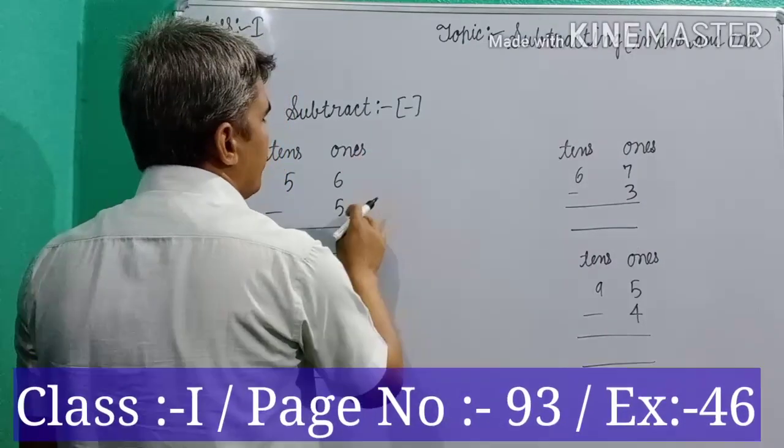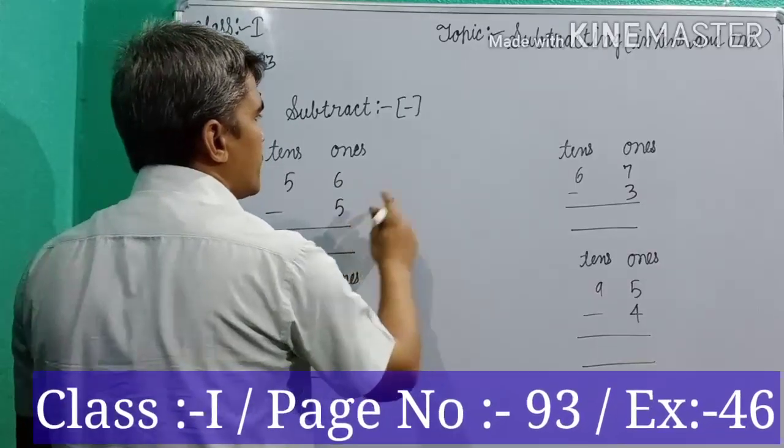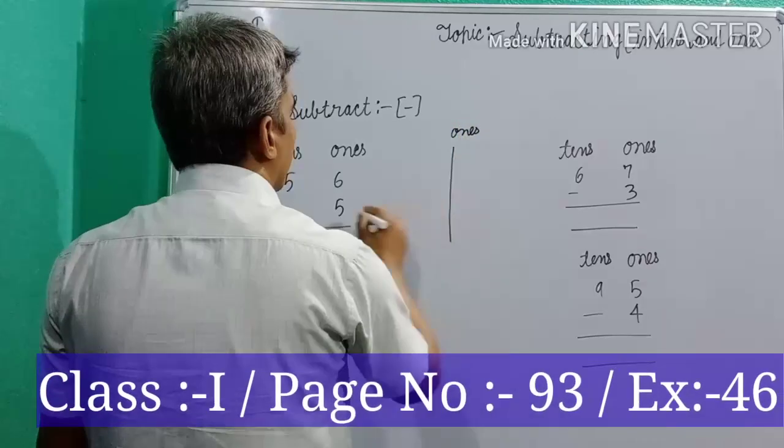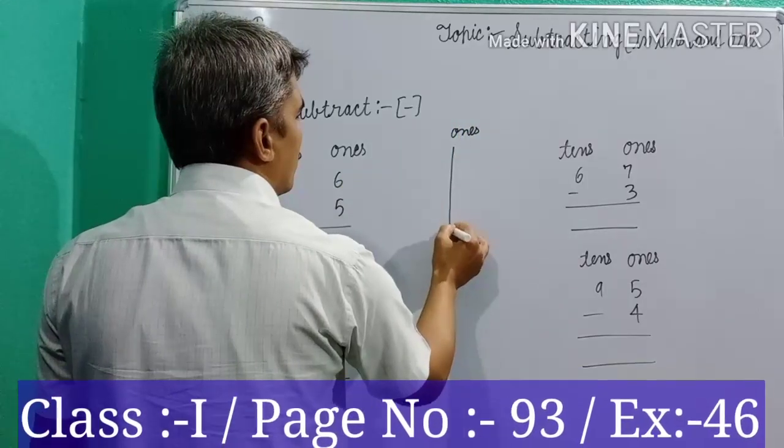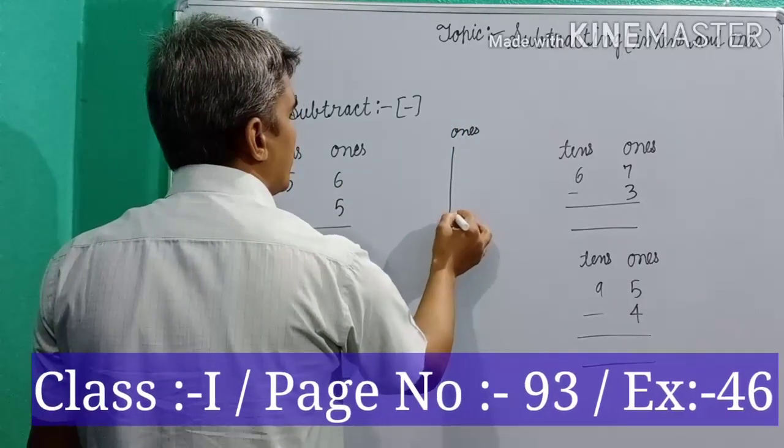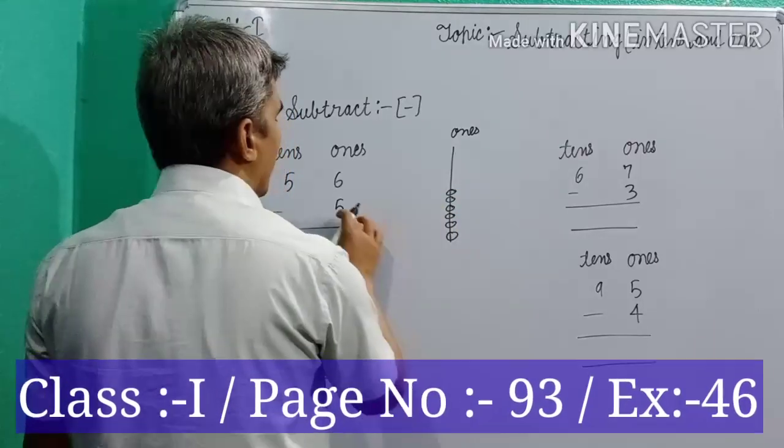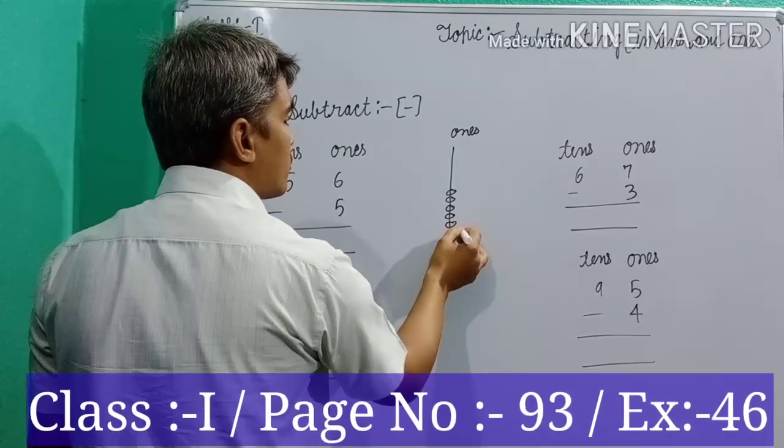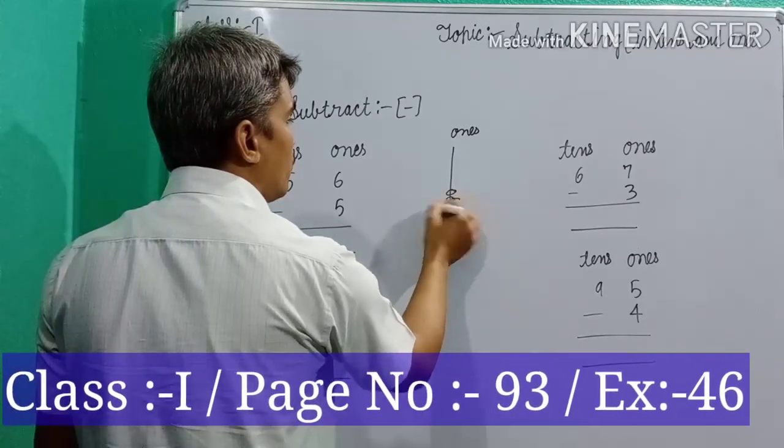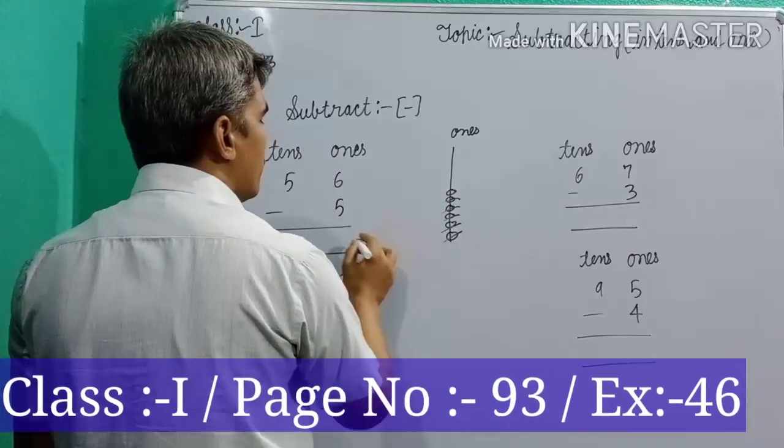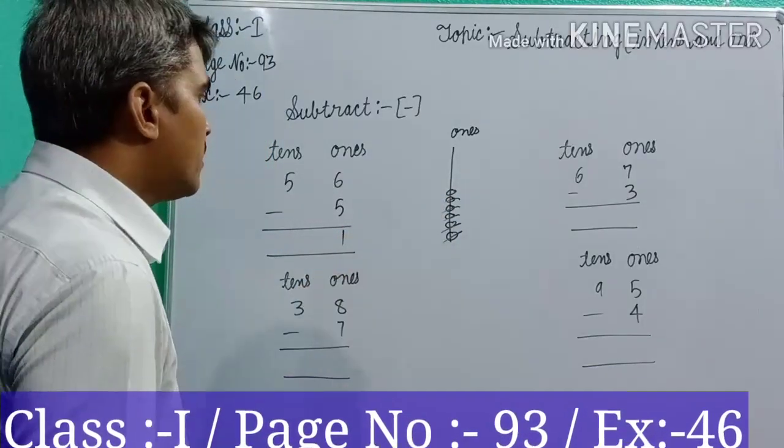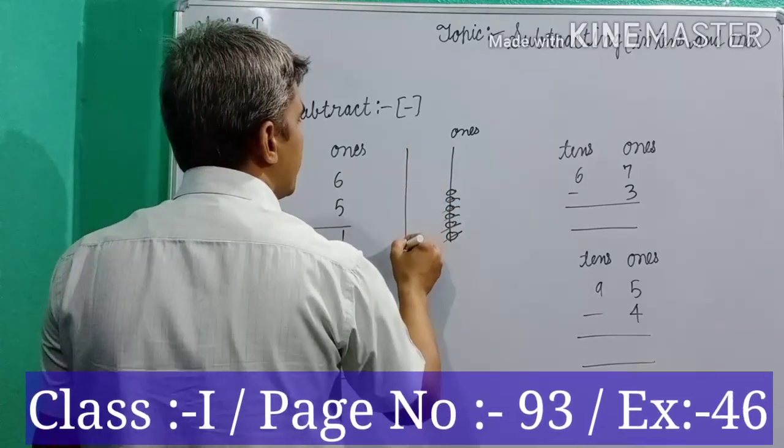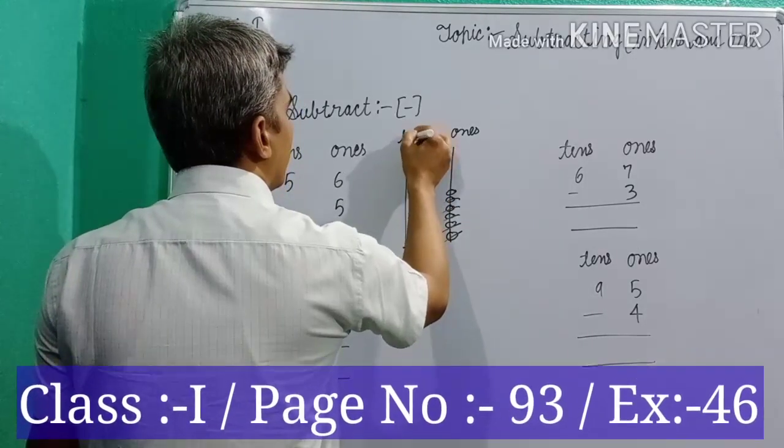Here, at first go to the right side, that means ones place digit. At first draw a line for ones place digit. Here 6, so make 6 bits: 1, 2, 3, 4, 5, 6. And below numbers 5, please cancel 5 bits: 1, 2, 3, 4, 5. How many bits left? 1 bit left. In this way,